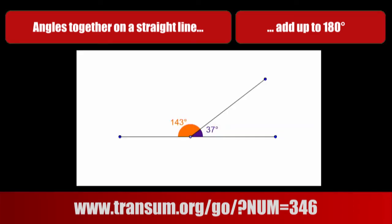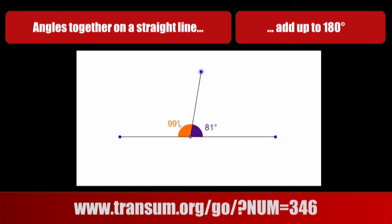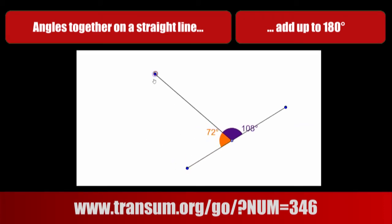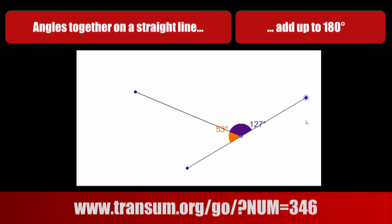Here's an example with some numbers. Wherever I move this arm, the angles added together will always give 180 degrees. It doesn't matter where I put them — those two numbers will add up to 180 degrees. And in fact, the straight line doesn't have to be horizontal. We could have something like this, and still those two angles add up to 180 degrees. The angles together on a straight line add up to 180 degrees.